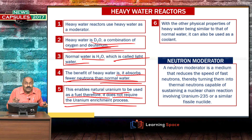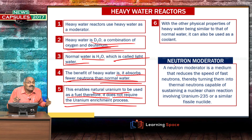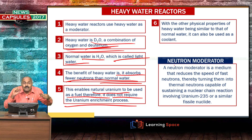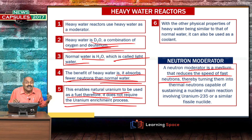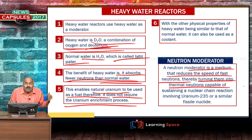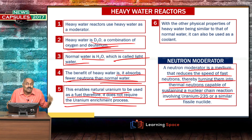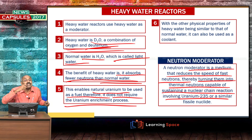What is a moderator? A moderator is a medium that reduces the speed of fast neutrons, thereby turning them into thermal neutrons capable of sustaining a nuclear chain reaction involving U235. Heavy water is a must if natural uranium is used.